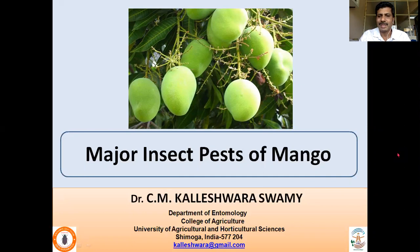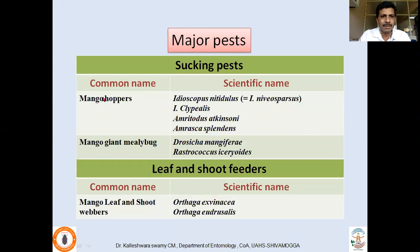The major pests include Mango Hopper species: Idioscopus nitridulus, Idioscopus clipealis, and Amritoda sathisonii — these three species infest the inflorescence. Whereas Amrasca splendens infests leaves. Then there is the Giant Mealybug, Drosicha mangiferae, and Rastrococcus iceryoides.